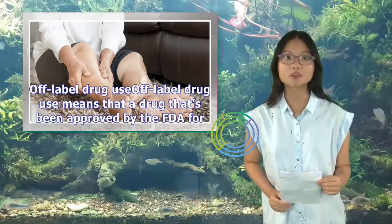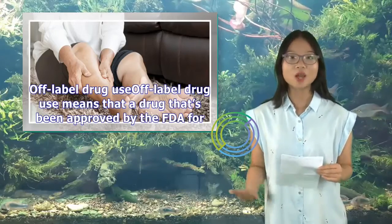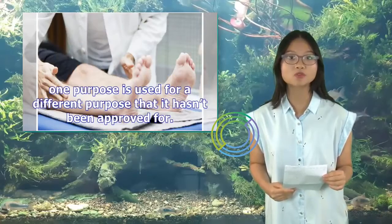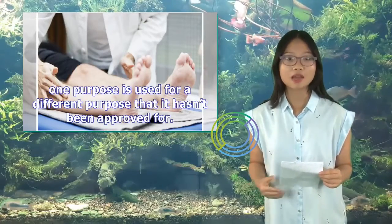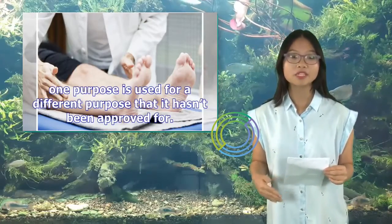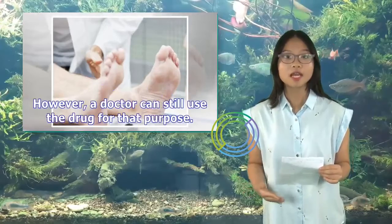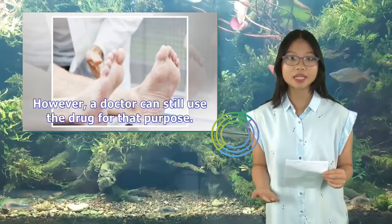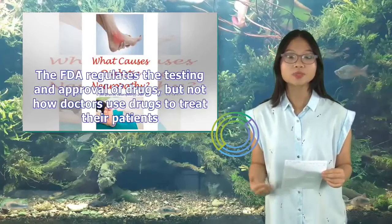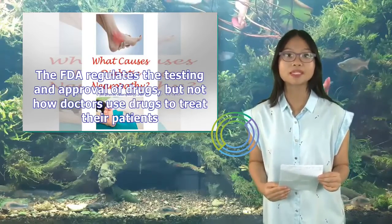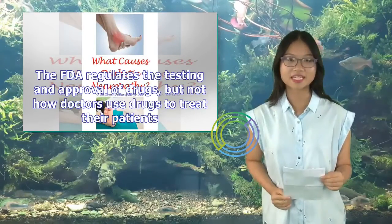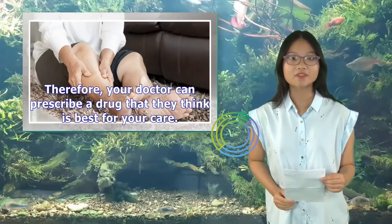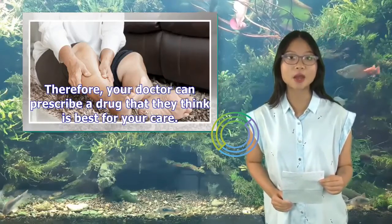Off-label drug use means that a drug approved by the FDA for one purpose is used for a different purpose that it hasn't been approved for. However, a doctor can still use the drug for that purpose. The FDA regulates the testing and approval of drugs, but not how doctors use drugs to treat their patients. Therefore, your doctor can prescribe a drug that they think is best for your care.